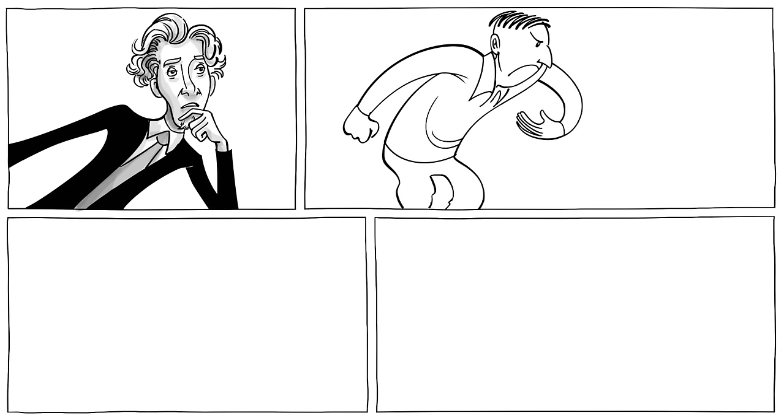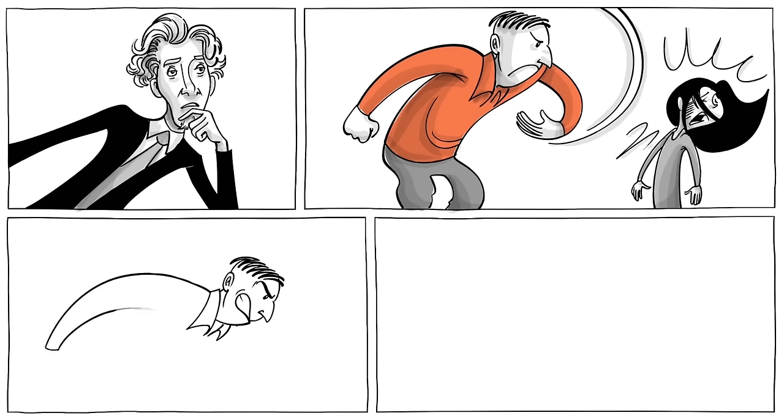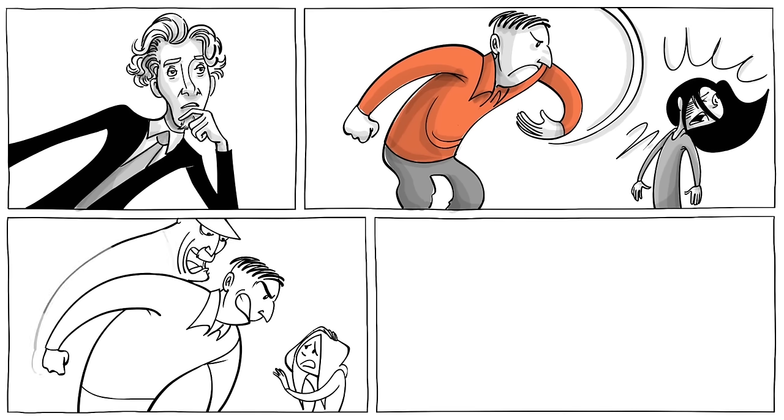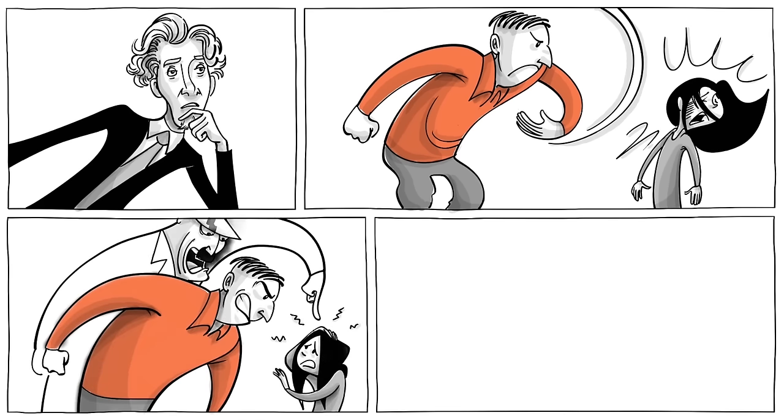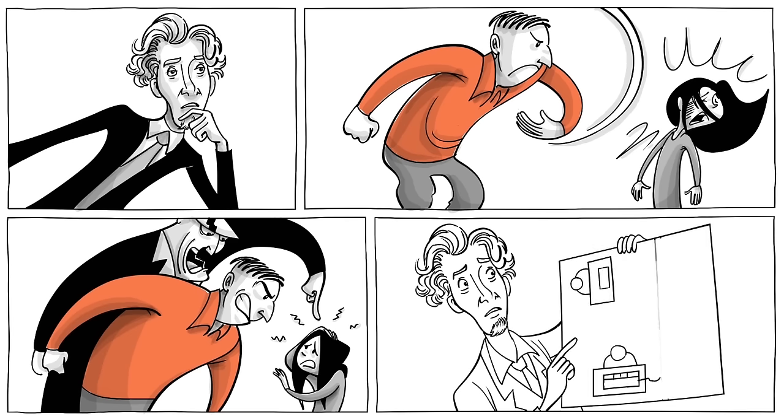In 1961, Stanley Milgram, a young psychologist, wanted to find out how ordinary citizens were able to commit acts of unspeakable evil in Nazi Germany. His theory? Some people do horrific things because they obey even the most wicked leaders. To test his theory, Milgram designed a clever experiment that changed our understanding of human behavior forever.